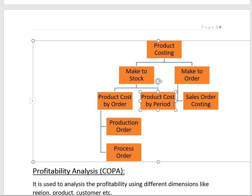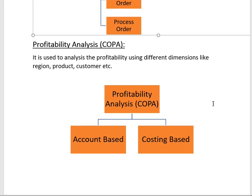Sales Order Costing is used for the Make-to-Order scenario, where manufacturing begins only after receiving a sales order. An example is the aerospace industry, which uses the Make-to-Order scenario.